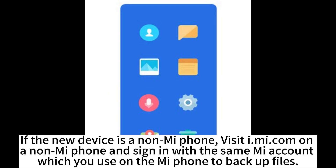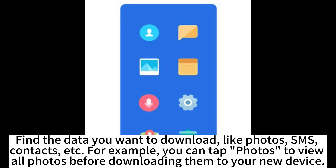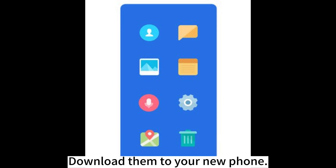If the new device is not a MePhone, visit i.mi.com on a browser and sign in with the same Me account you used on your MePhone to back up files. Find the data you want to download, such as photos, SMS, contacts, etc. For example, tap Photos to view all photos before downloading them to your new device.